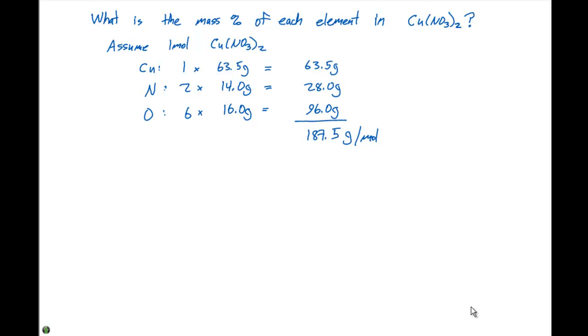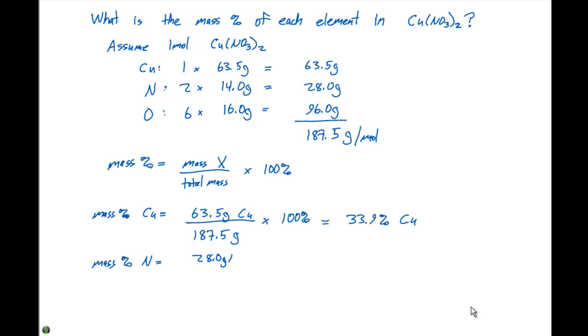So now we can use the mass percent. Our formula for mass percent is gonna equal the mass of x divided by the total mass, then we need to take this decimal and multiply by 100%. So our mass percent of copper is gonna equal 63.5 grams of copper divided by our total mass, which is 187.5 grams times 100%.